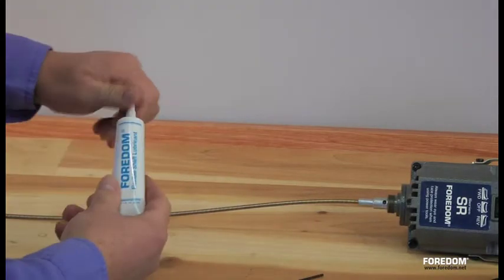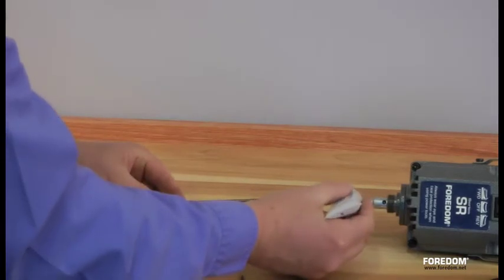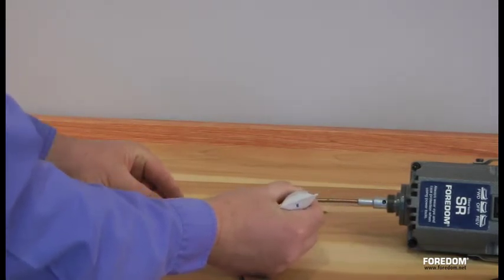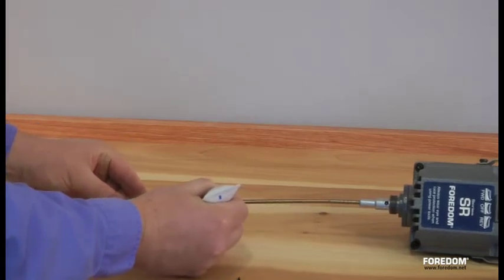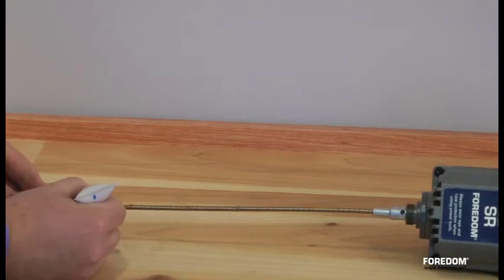Now you're ready for the lubrication. The Fordham High Temperature Flexible Shaft Grease. We put a very thin bead on it all the way down, probably about 10 to 12 inches from the bottom.